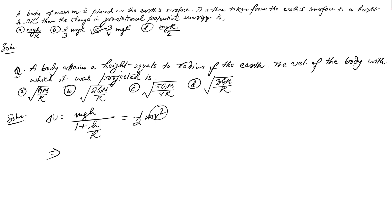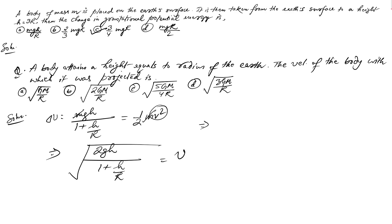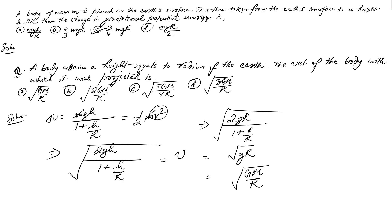For this problem, h equals R, so: v equals square root of 2gR divided by (1 + R/R) equals square root of 2gR/2 equals square root of gR. We know that gR equals GM/R from the formula g equals GM/R². Checking the options, option A is the correct answer.